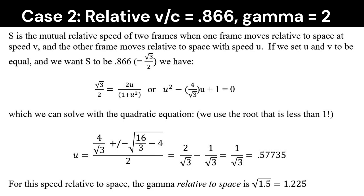I'm not going to go through all the math here but we can solve for the case in which both reference frames are moving through space at the same speed and yet they end up with a relative velocity of 0.866c. That turns out to be, if you want to look at the math, if both frames have a relative velocity relative to space of 0.57735, then their gamma relative to space is 1.225. But the relative velocity relative to each other is 0.866. So let's just look at this case.